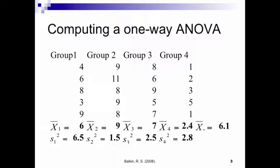The grand mean is basically computed by taking all the scores — 4, 6, 8, 3, 9, 9, 11, 8, 9, 8, 8, 6, 9, 5, 7, 1, 2, 3, 5, 1 — adding them all up and dividing by the number of observations, which in this case is 20. Notice if you take 6 plus 9 plus 7 plus 2.4 and divide by four, you'll also get 6.1, but that shortcut only works when you have a balanced design — the same number of participants in each group. Here we have five participants in each of the four groups. That shortcut won't always work if the design is unbalanced, so it's always good to take all values and divide by total observations.